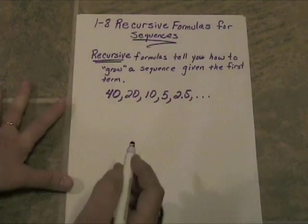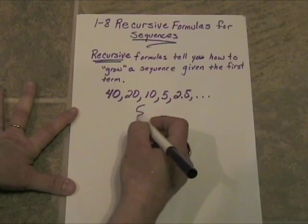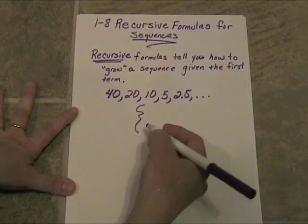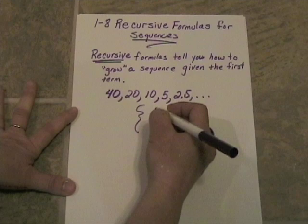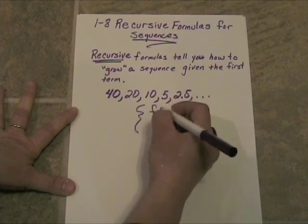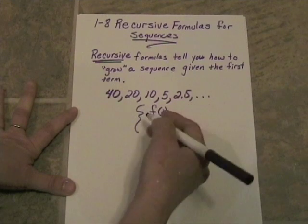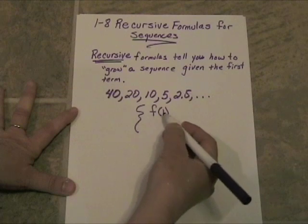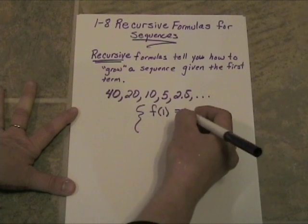Recursive formulas always have two parts. And those two parts are generally written in a brace. The first thing you want to do is state what the first term is. So the f of 1 in this case is 40.